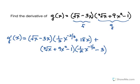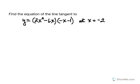So let's look at one more example. In this one, we're asked to find the equation of the tangent line to y equals 2x squared minus 6x times the quantity negative x minus 1 at the x value of negative 2. So of course, remember to write the equation of any line, we need to have the slope.